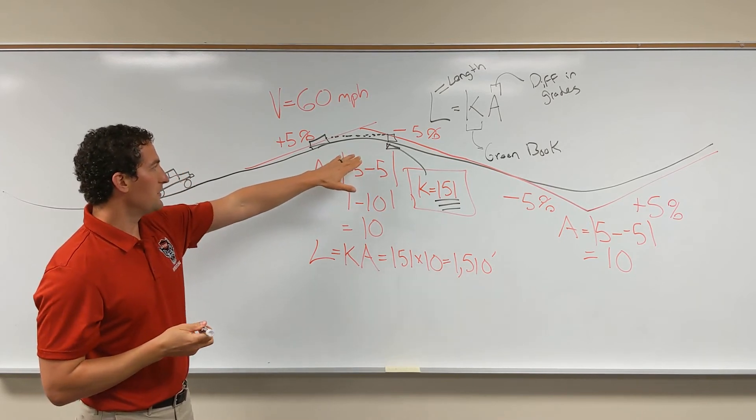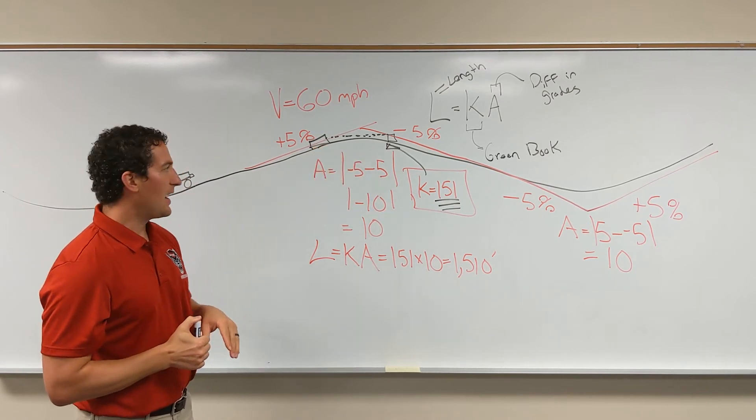The calculations are available. The equations are available in the green book. But this 151 builds in these assumptions. The object that we're looking for, two feet off the ground, and the eye height of the driver.